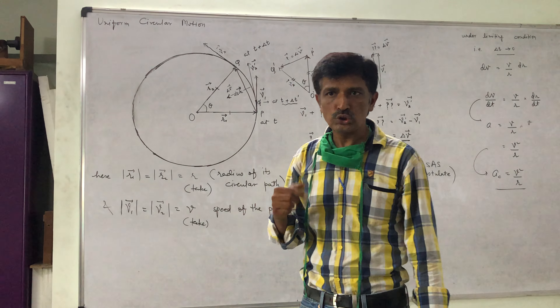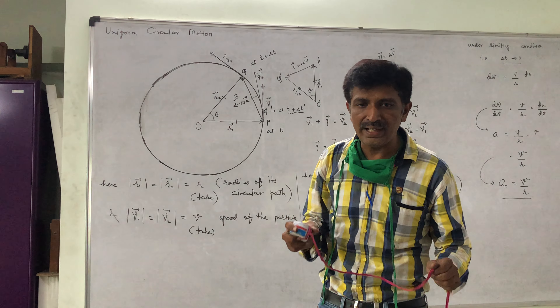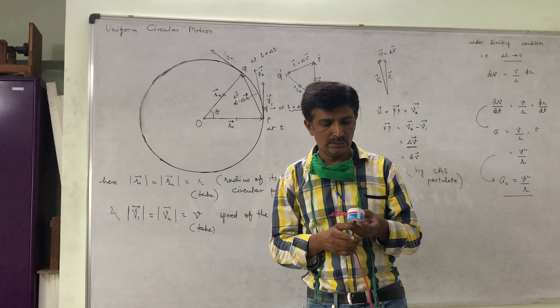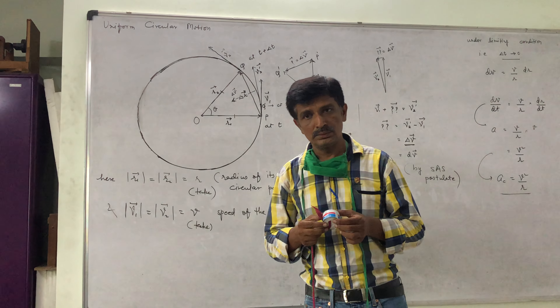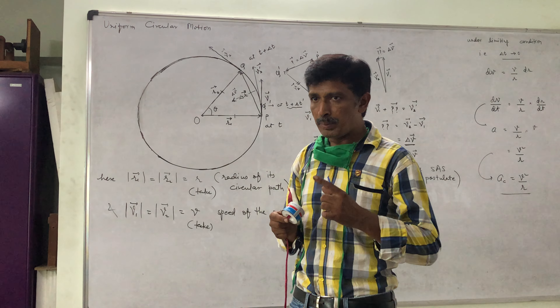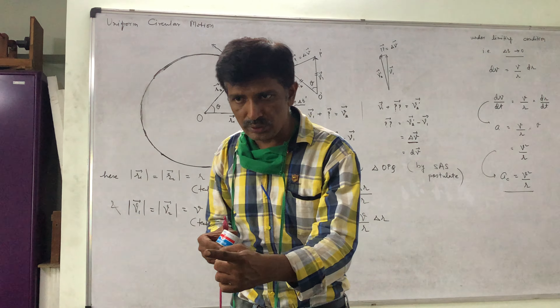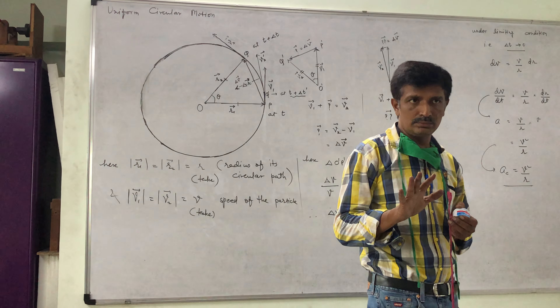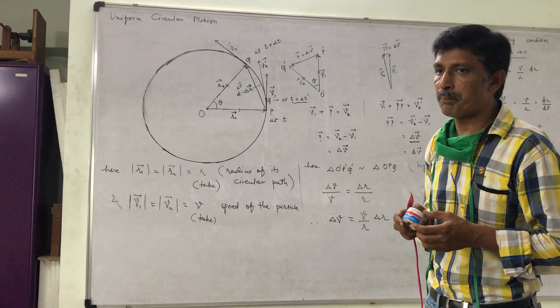So accelerated motion is there because the velocity changes. Now we want to find this acceleration. Acceleration is a vector quantity, so we want to find its direction as well as magnitude.